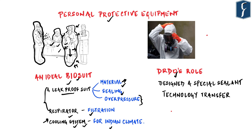So the three things an ideal biosuit should have are: a leak-proof non-permeable structure, an independent respirator, and a cooling system. DRDO has prepared a special sealant as an alternative to seam-sealing tape, based on the sealant used in submarine applications. Earlier, Indian companies sealed biosuits with submarine-grade material, but DRDO has developed a new sealant and transferred this technology to private firms, which will go a long way in ramping up biosuit production in India.